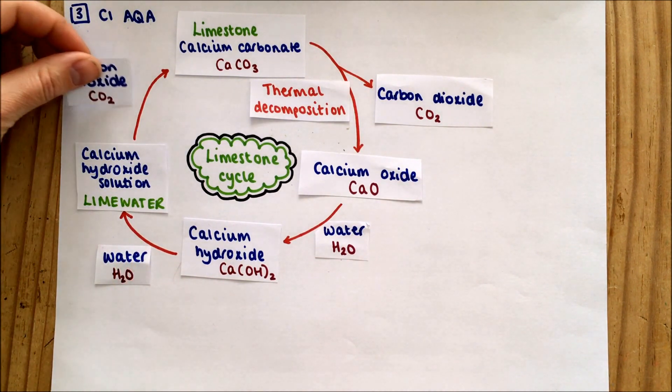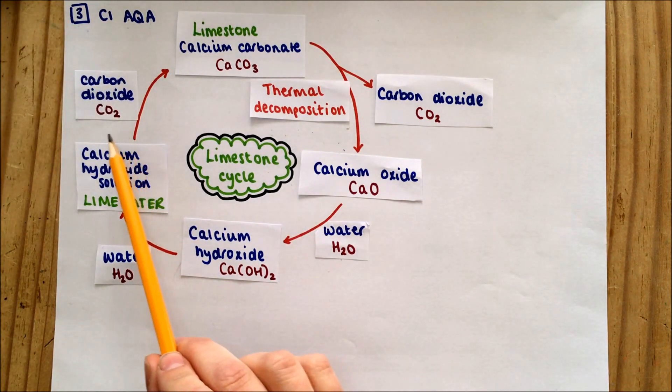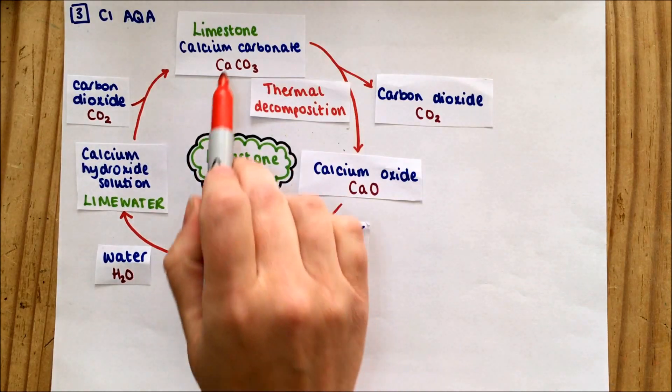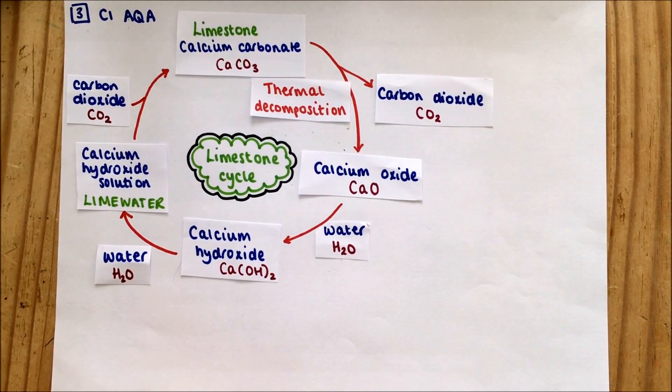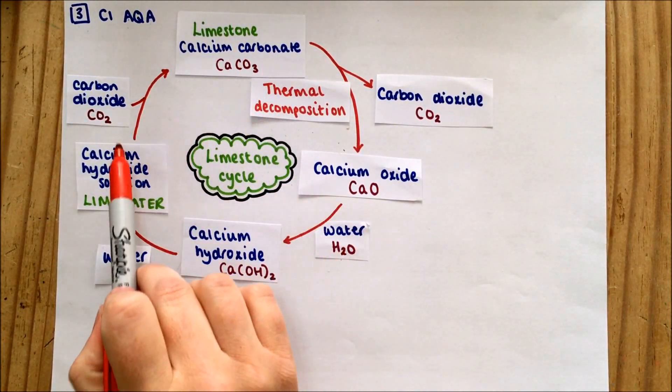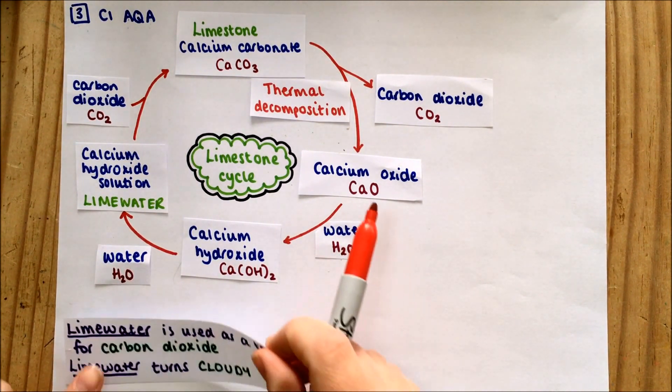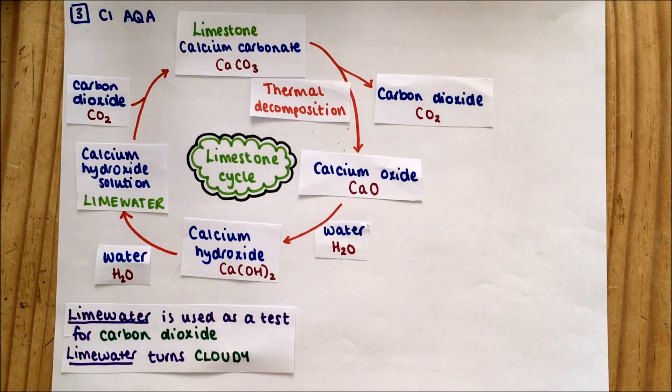If we add carbon dioxide to lime water, which is completely colorless and clear, we make limestone. That's why it goes cloudy in the presence of carbon dioxide - because you're making little tiny grains of limestone or calcium carbonate. So lime water is used as a test for carbon dioxide because lime water turns cloudy. If you breathed into lime water with a straw and bubbled it through, it would go cloudy.